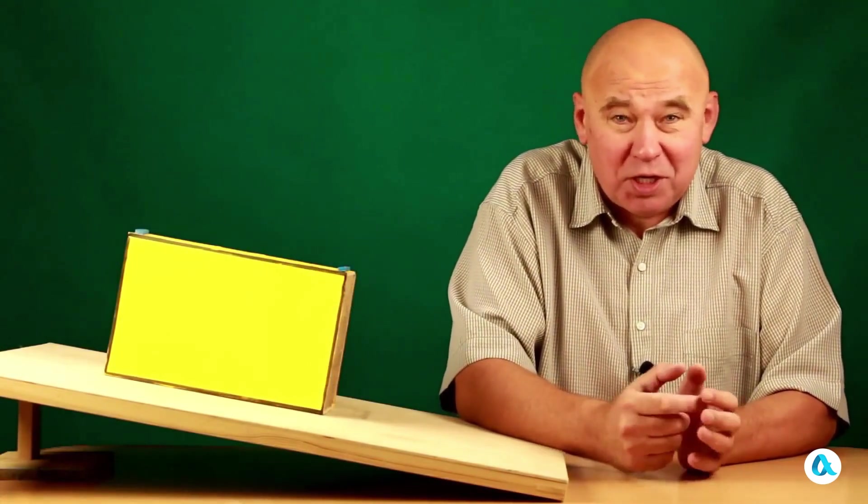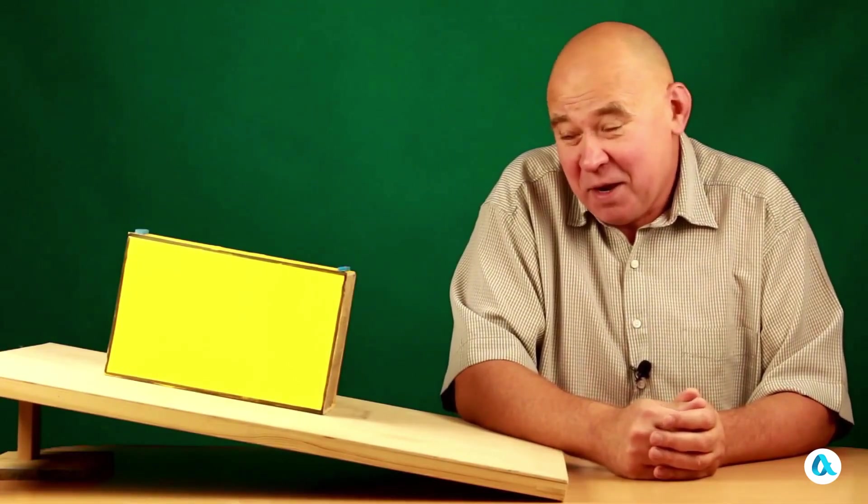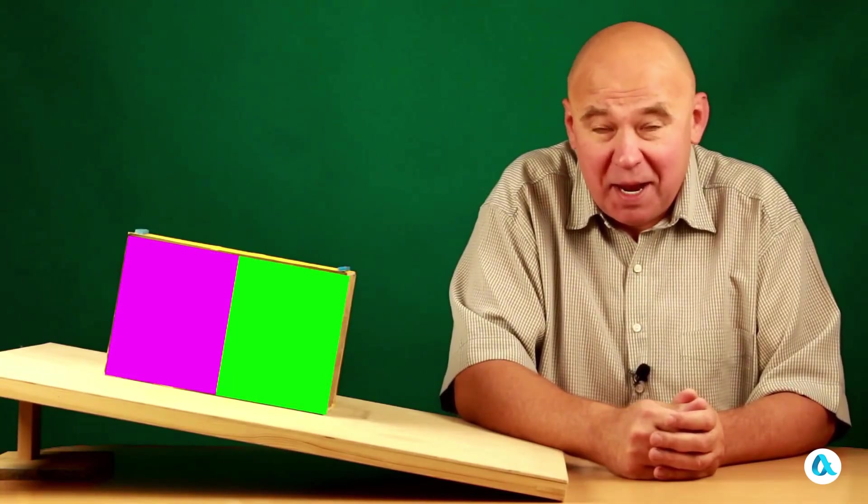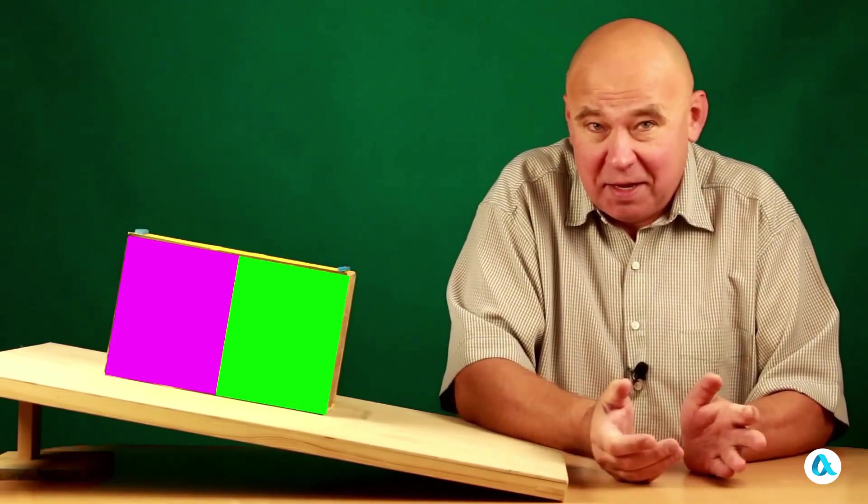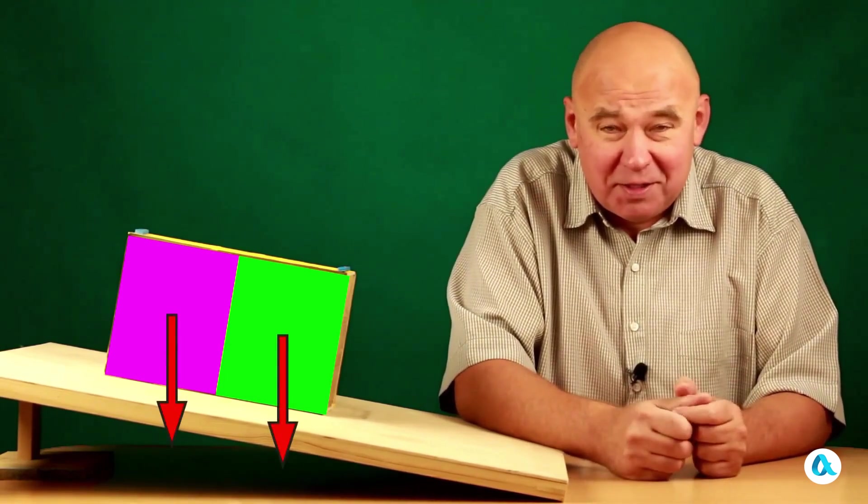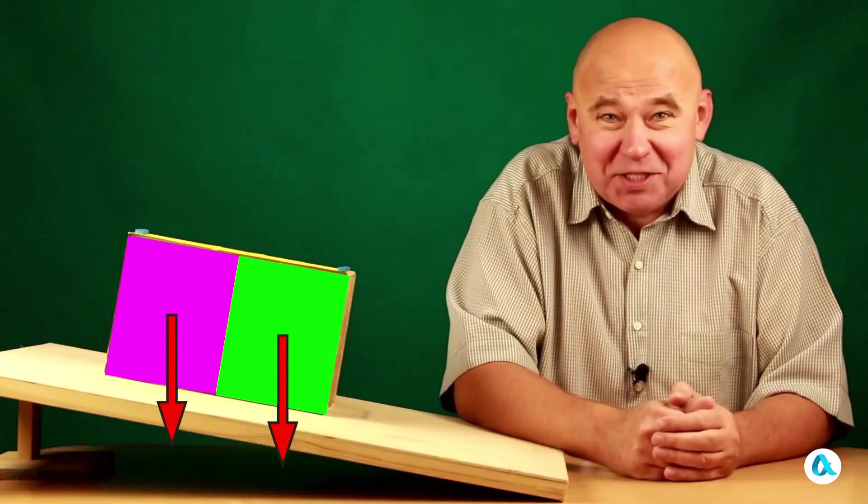Now I want to ask Alexei a very naive question, which might have also occurred to some of our viewers. Here I have a block resting on an inclined plane, and once again I mentally divide it into a front and a back part. It seems that these parts weigh the same, so they should press down on the support equally. Where am I going wrong in this line of reasoning?